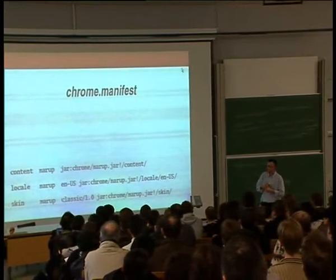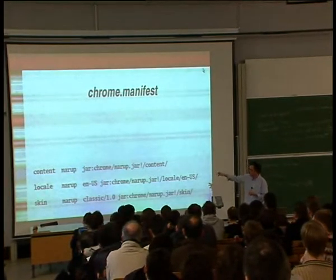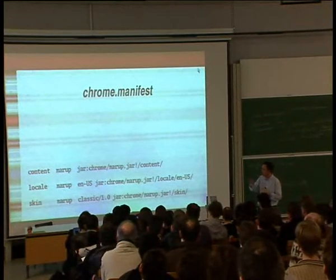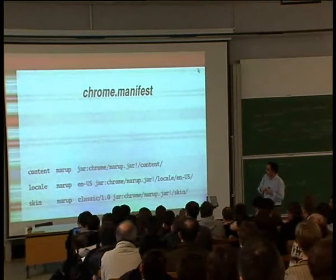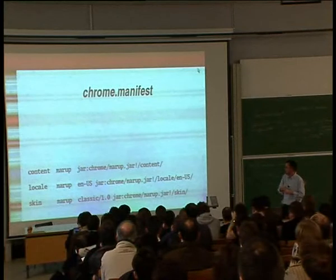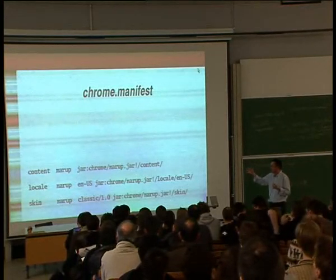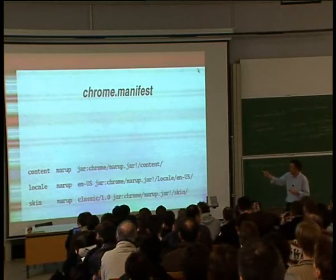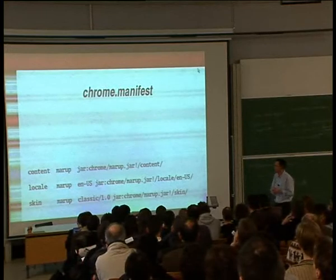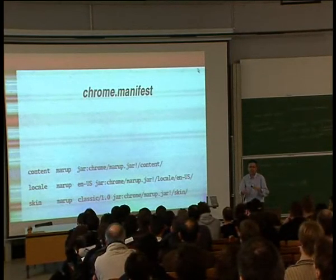It's now just a flat file called chrome.manifest. You have three flags: content, locale, and skin. Whatever your package name is, you put it there. The content files are your XUL files, XBL files, and JavaScript files — here using a JAR URL, pointing the Chrome registry to look for content files inside the JAR file. For locale, you specify, e.g., en-US. You can have multiple locales with multiple entries. The skin entry has the skin name, identifier, and path to CSS files and images.